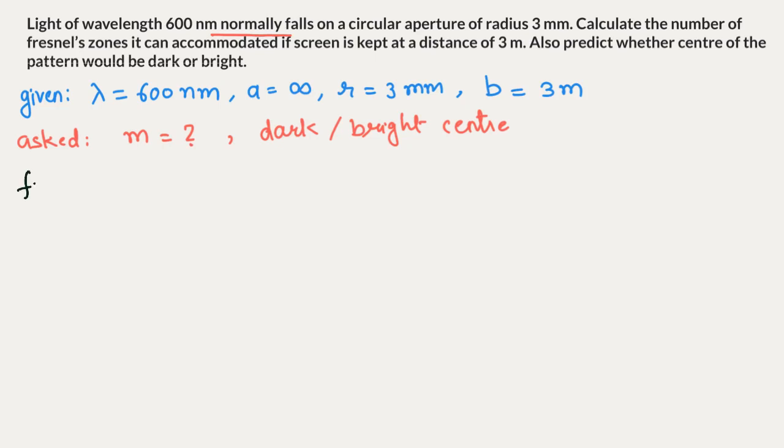First, we will write the formula used. We have done it in previous videos. It is given by: 1/a + 1/b = m×λ/r². Now, 'a' is given to us, so let us solve: 1/∞ + 1/b, where b is given as 3 meters.